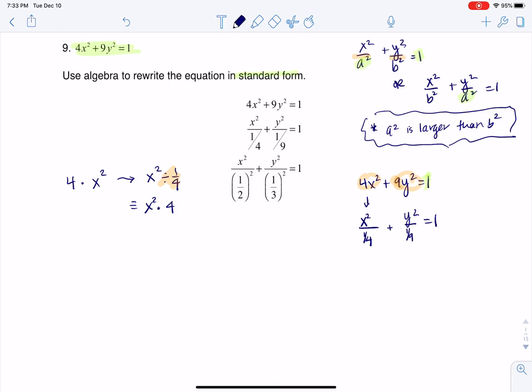So I can start to take a look at it that way, and it's no accident that 4 and 9 are perfect squares. I could rewrite this as x squared over 1 half squared, and then y squared over 1 third squared is equal to 1.